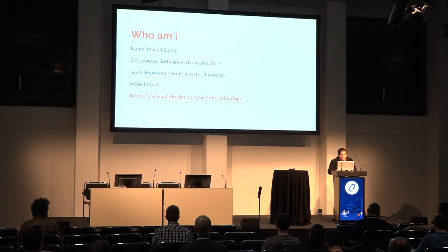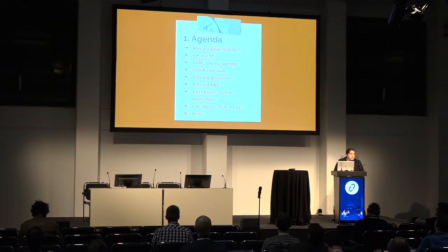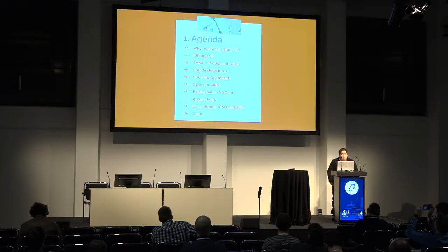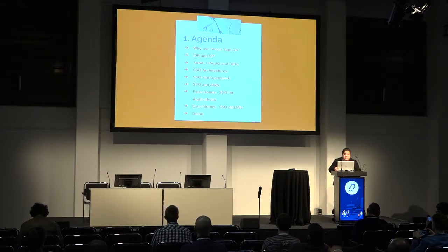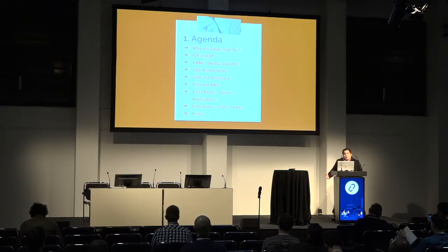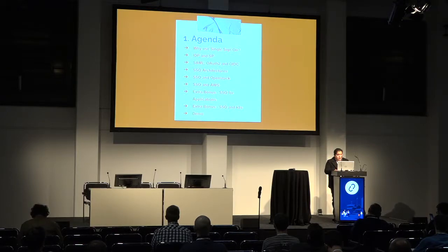I'm going to go a little bit fast. First, we're going to see why you need single sign-on, then the difference between the IDP and SP. Then we'll go over some basic protocols and standards for authentication — SAML, OAuth2, and OpenID Connect. Then we'll see some software and SSO architectures, how to enable it for OpenStack, how to enable it for AWS, SSO for applications that are already out there, how to do it on Kubernetes, and then a small demo on a lab I set up.